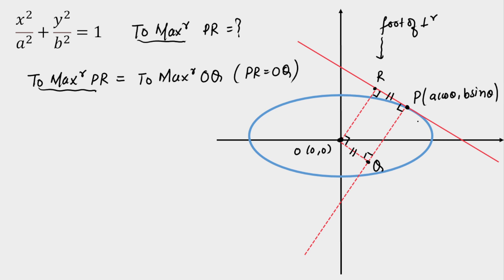So my approach is: write the equation of the normal to the ellipse, drop a perpendicular from the origin to that normal, and calculate the distance OQ. Then differentiate and find the maximum — without ever needing the R point. Our objective is now to maximize OQ.